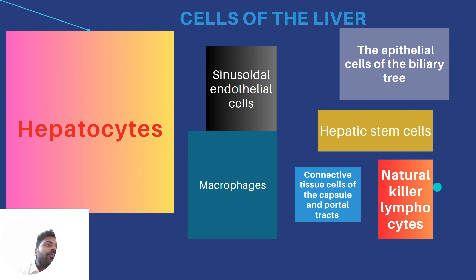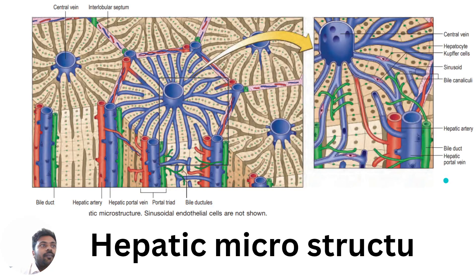Coming to the cells of the liver: apart from hepatocytes, the liver has many cell types including hepatocytes, sinusoidal endothelial cells, macrophages, hepatic stem cells, natural killer lymphocytes, epithelial cells of the biliary ductules, and connective tissue cells of the capsule and portal tracts. The microstructure of the liver contains the bile duct, hepatic artery, hepatic portal vein — together called the portal triad — and bile ductules.